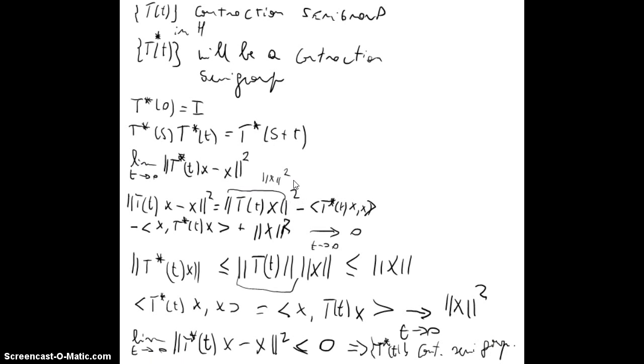Recall that the contraction semigroup was when you can bound the norm of T(t) with a bound that doesn't depend of the time t, and the bound was 1, the M that we had, so this w was 0, so it doesn't depend of time, and this was 1. So, all of them, we have that, let B be the generator of the adjoint semigroup T*(t).